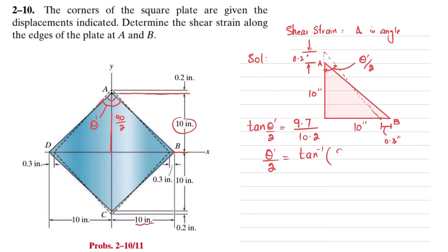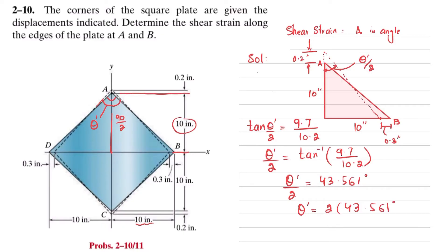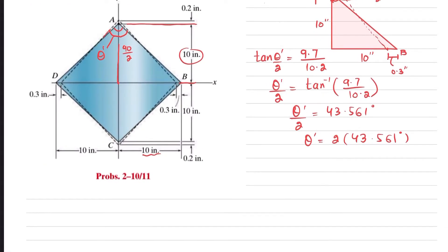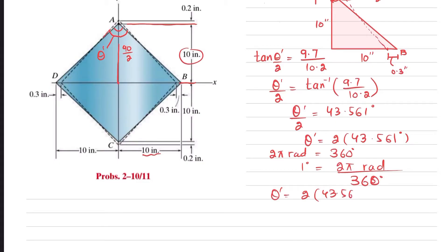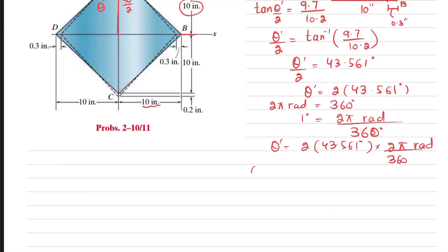From here, theta dash divided by 2 equals arctan(9.7 / 10.2), which gives 43.561 degrees. Therefore theta dash equals 2 × 43.561 degrees. Converting to radians: multiply by 2π over 360, giving theta dash equal to 1.52056 radians. This is the new angle at point A after deformation.